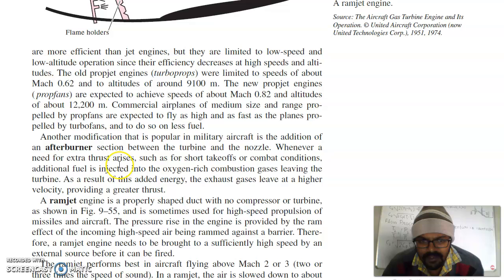Another modification that is popular in military aircraft is the addition of afterburner section between the turbine and the nozzle. Whenever a need for extra thrust arises, such as for short takeoffs or combat conditions, additional fuel is injected into the oxygen rich combustion gases leaving the turbine. As a result of this added energy, the exhaust gases leave at a higher velocity, providing a greater thrust.